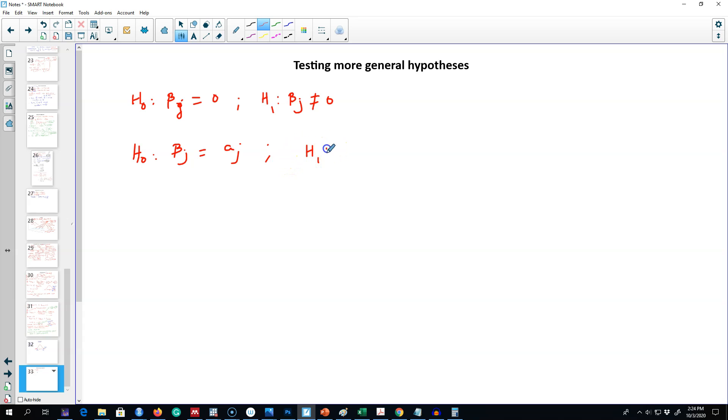We will calculate t-stat as the estimated value of beta minus the hypothesized value of beta, which is aj in this case, and divide it by the standard error of beta j. Again, we are going to use a rejection rule and compare the critical value with this calculated value to see whether we reject the null hypothesis or fail to reject the null hypothesis.